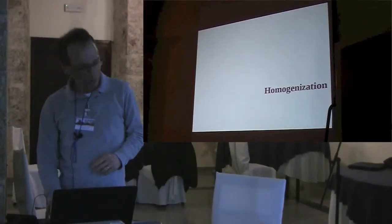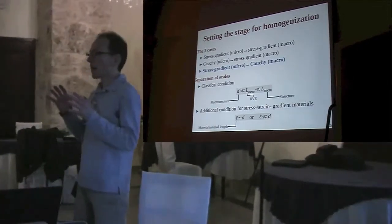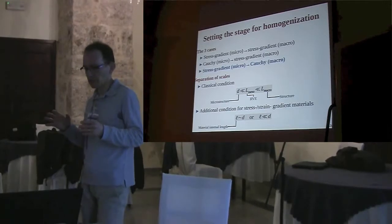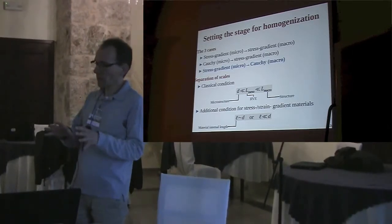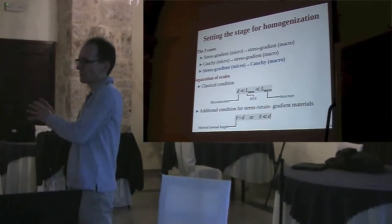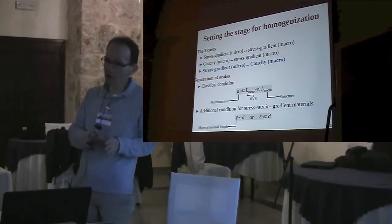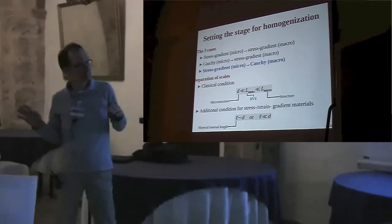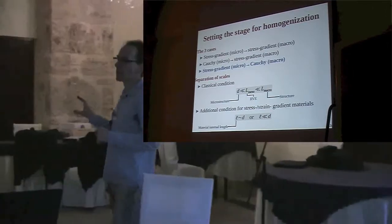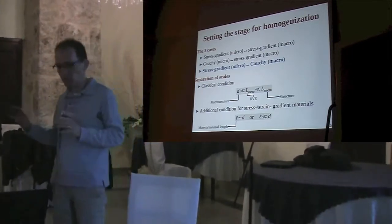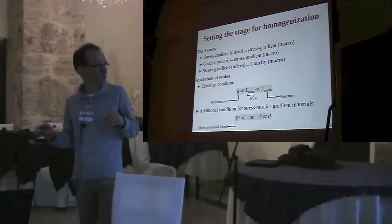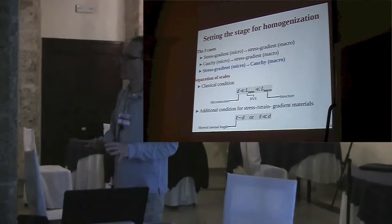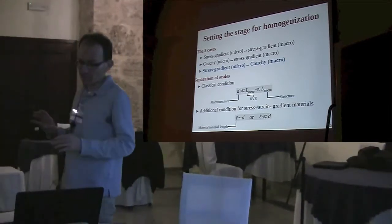It's time to move to homogenization. There are three interesting cases when discussing homogenization of stress or strain gradient materials: starting from stress gradient and ending with stress gradient; starting from Cauchy and ending with stress gradient; and starting from stress gradient and ending with Cauchy at the macroscopic level. I'm going to address this last case — arguably the simplest — starting from stress gradient materials and ending up with Cauchy materials.